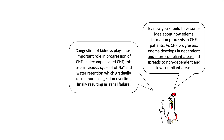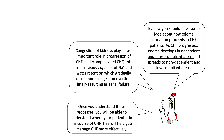By now you should have some idea about how edema formation proceeds in heart failure patients. As heart failure progresses, edema develops in dependent and more compliant areas first, then spreads to non-dependent and low-compliant areas. Congestion of the kidneys plays the most important role in progression of heart failure. In decompensated heart failure, this sets in a vicious cycle of sodium and water retention, which gradually causes more congestion over time, finally resulting in renal failure.